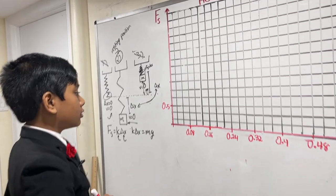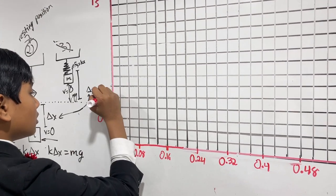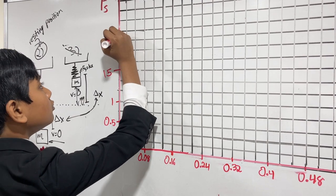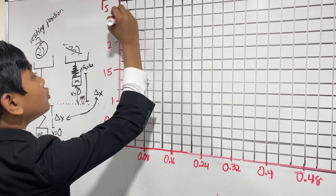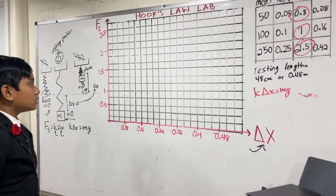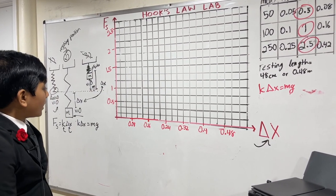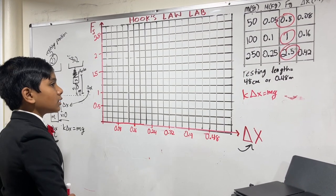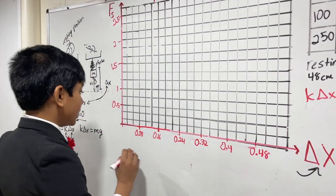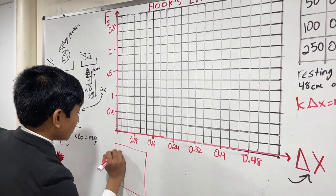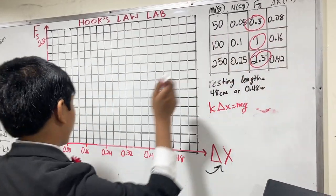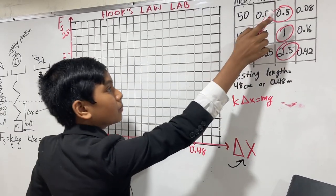If the spring is at equilibrium, these two forces must be equivalent. So, that means that k delta x is equal to mg, and mg is fg, which is this column over here. That means we've got to use this column for our calculations instead. So, now, let's start doing that. So, we have 0.5 over here, 1 over here, 1.5 over here, 2 over here, and 2.5 way on the top.